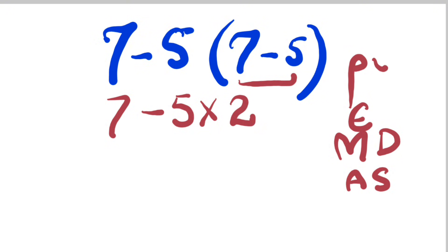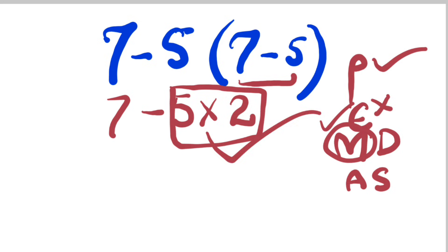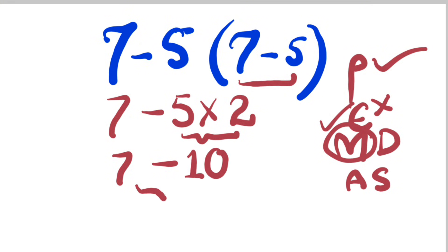Now, after P we have exponent then multiplication, but exponent is missing and we have multiplication. So we have to multiply instead of subtraction. 7 will be as it is, and minus 5 times 2 will be equal to minus 10, which will be further solved to get minus 3, which will be our correct answer for this question. Thank you for your support.